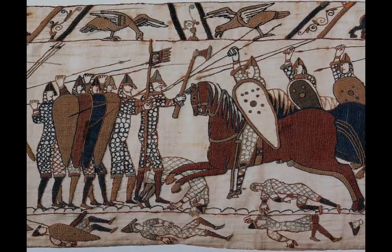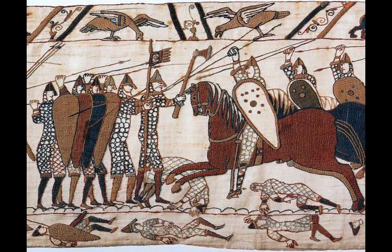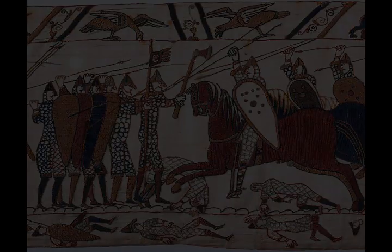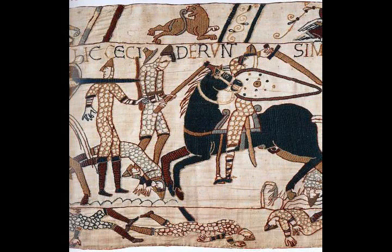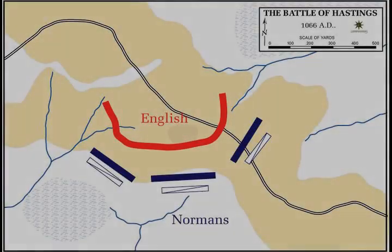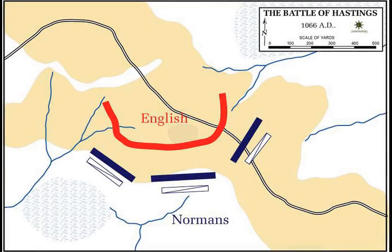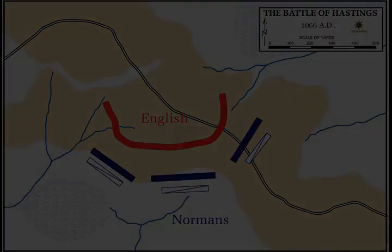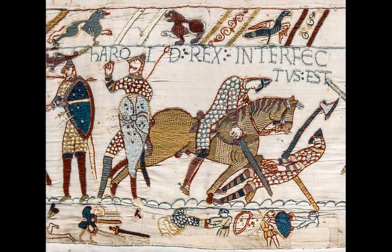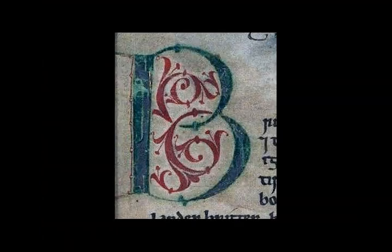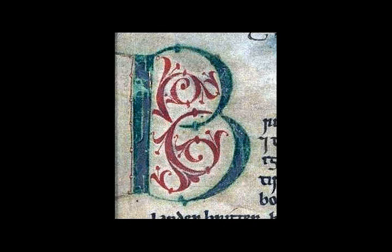The exact numbers and composition of William's force are unknown. A contemporary document claims that William had 776 ships, but this may be an inflated figure. Figures given by contemporary writers for the size of the army are highly exaggerated, varying from 14,000 to 150,000. Modern historians have offered a range of estimates for the size of William's forces: 7,000 to 8,000 men, 1,000 to 2,000 of them cavalry; 10,000 to 12,000 men; 10,000 men with 3,000 of them cavalry; or 7,500 men. The army consisted of cavalry, infantry, and archers or crossbowmen, with about equal numbers of cavalry and archers and the foot soldiers equal in number to the other two types combined.